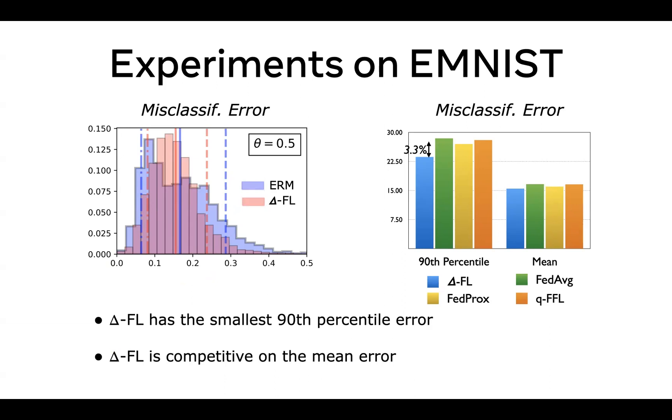On this figure on the right, we compare simplicial FL to some of the state-of-the-art baselines when it comes to dealing with heterogeneity. And we see that simplicial FL outperforms them in the 90th percentile of misclassification error, which is an indicator of performance on non-conforming clients. And at the same time, simplicial FL is competitive on the mean error.